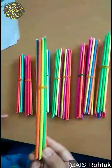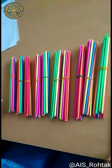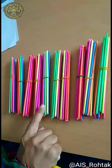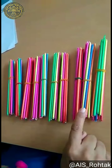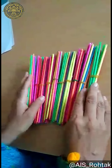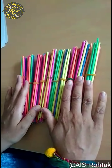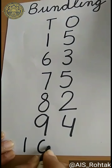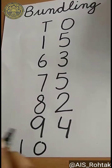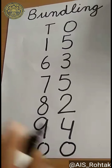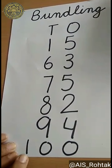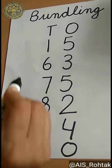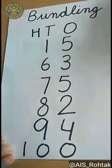If I add 1 more ten here, let's count how many tens I have. 1, 2, 3, 4, 5, 6, 7, 8, 9, 10. I have 10 tens — 10 bundles of 10 sticks. And do I have any ones? No, I don't have any ones. So I will write 0 next to the ones place. It becomes 100. H stands for hundreds — so 100.